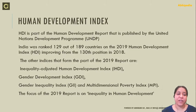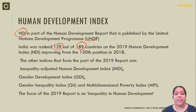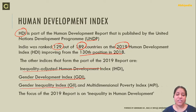The Human Development Index is published by UNDP along with its Human Development Report. The United Nations Development Programme publishes this report every year. India was ranked 129 out of 189 countries in the year 2019, which has improved from 130th position in 2018. Other indices in this report include the Inequality Adjusted Human Development Index, Gender Development Index, Gender Inequality Index, and Multidimensional Poverty Index.